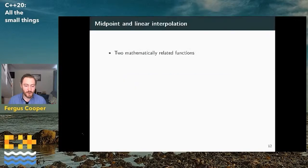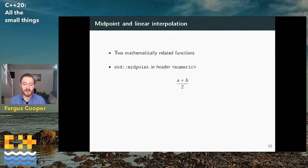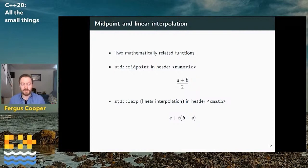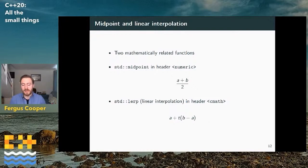I'm going to start by talking about midpoint and linear interpolation — two things we're getting in C++20. They are mathematically related functions in different headers. std::midpoint is in the numeric header; mathematically it's just a plus b over 2. And std::lerp for linear interpolation is in the cmath header, given by a plus t times (b minus a) — we start at a and go some proportion of the way towards b. If t is between 0 and 1, we're interpolating; if it's outside that range, we're extrapolating.